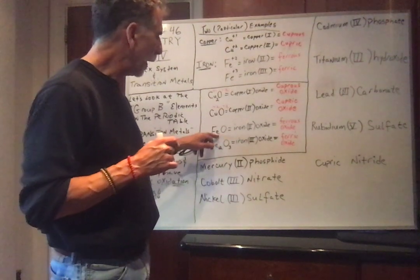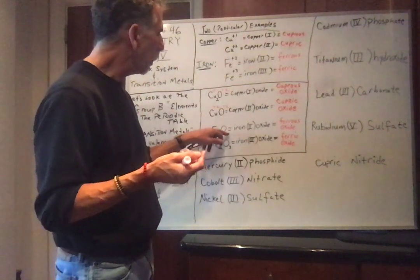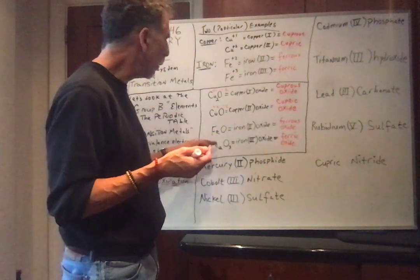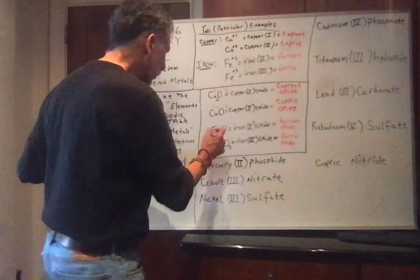And the same for iron. Fe, if it has plus 2, oxygen is minus 2, that would be iron 2 oxide or ferrous oxide.